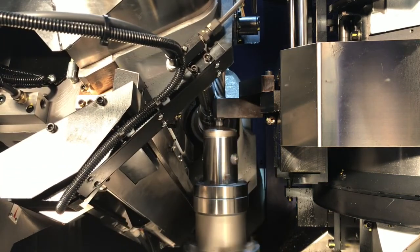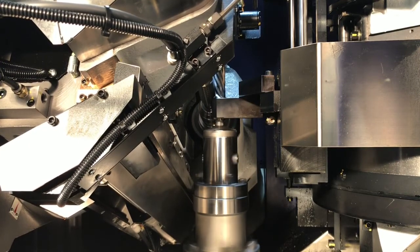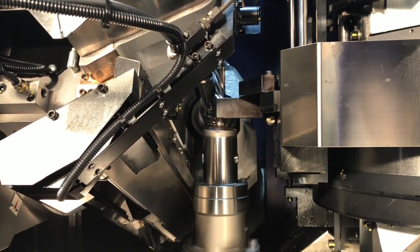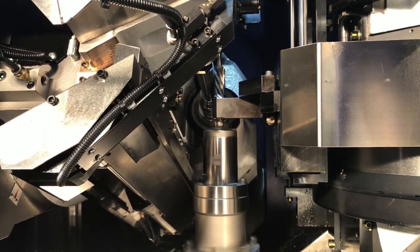After the part alignment and the stock division is complete, the skive-hobbing begins. It uses the same generating process as for all hobbing operations.